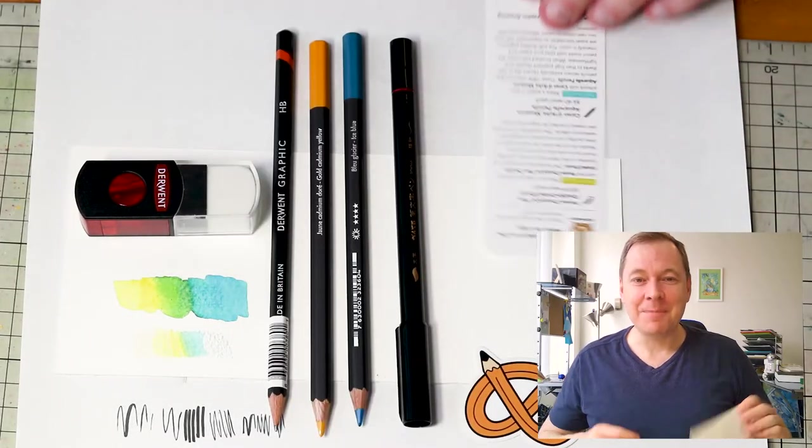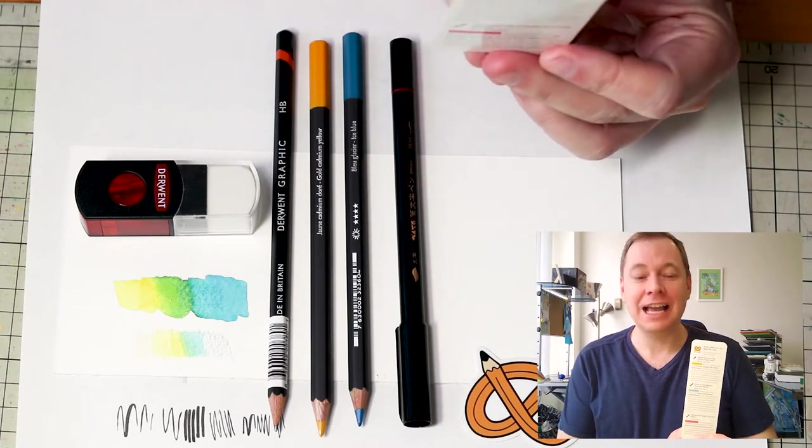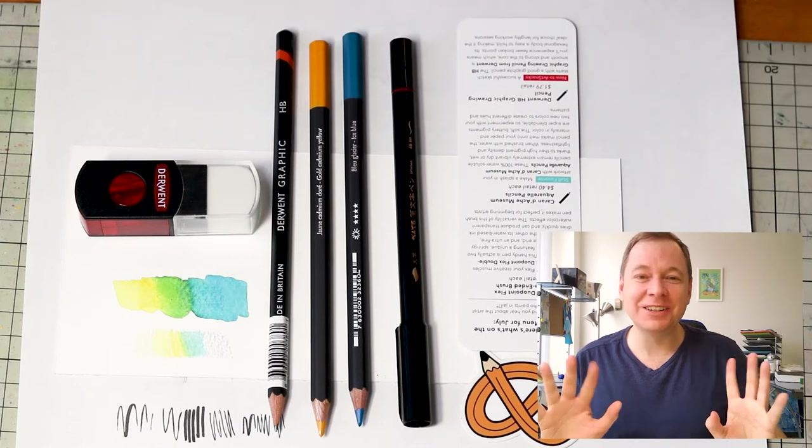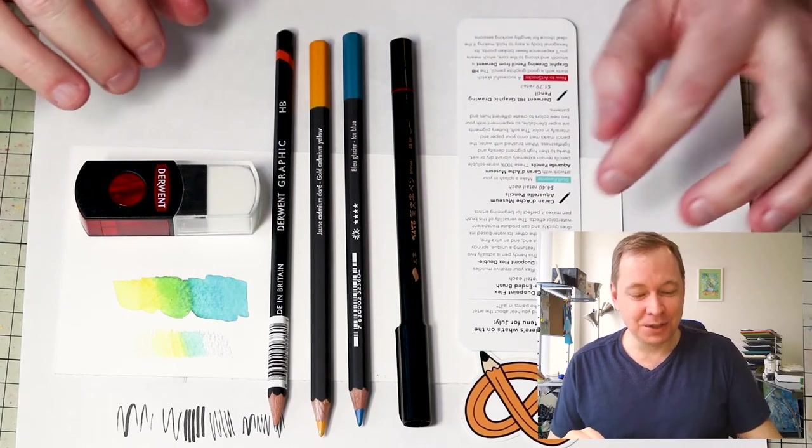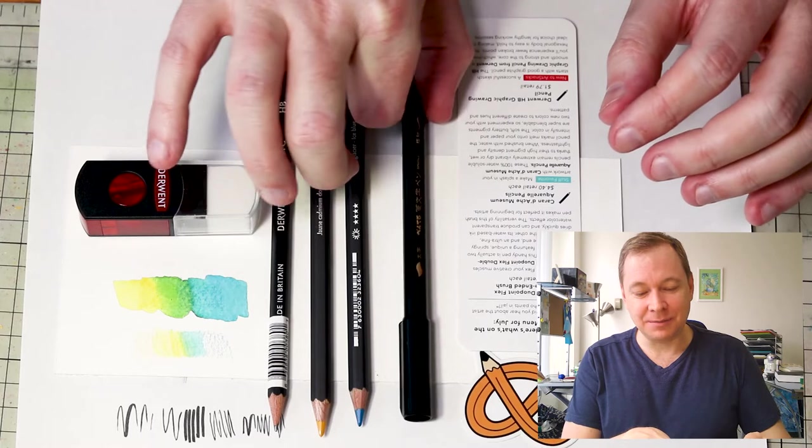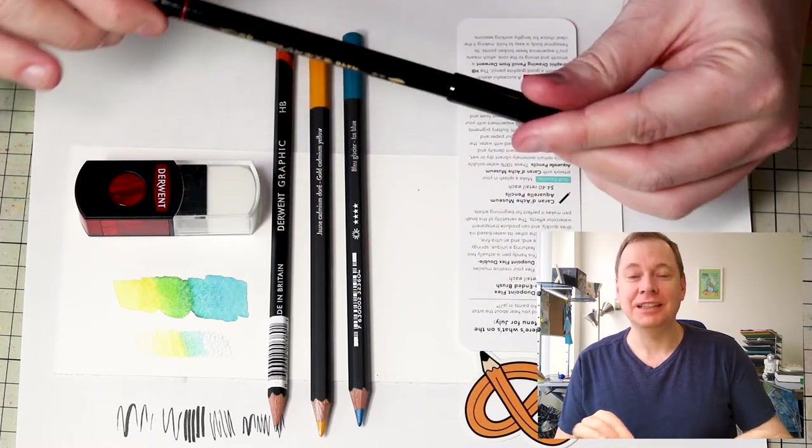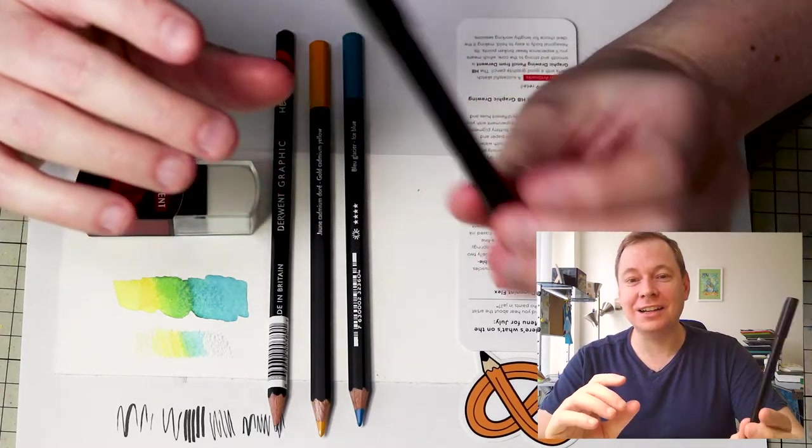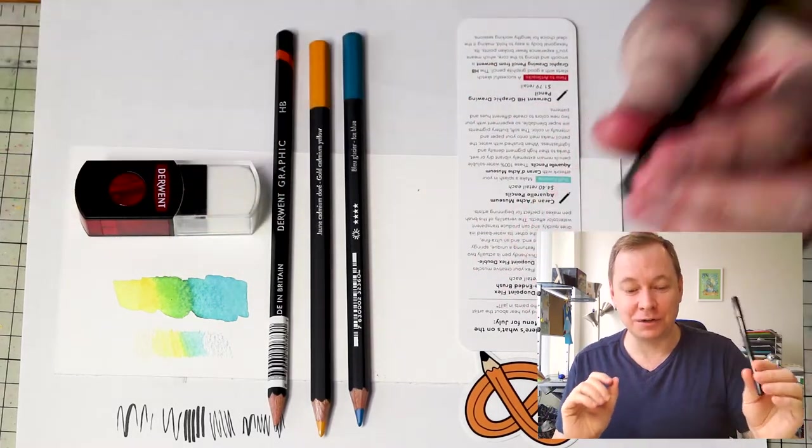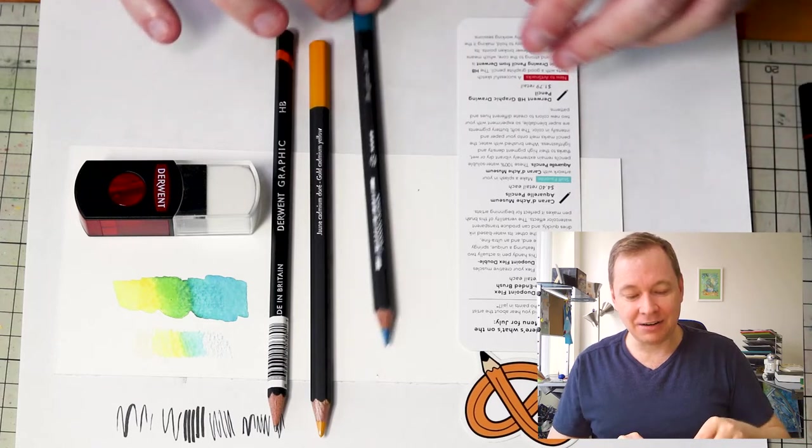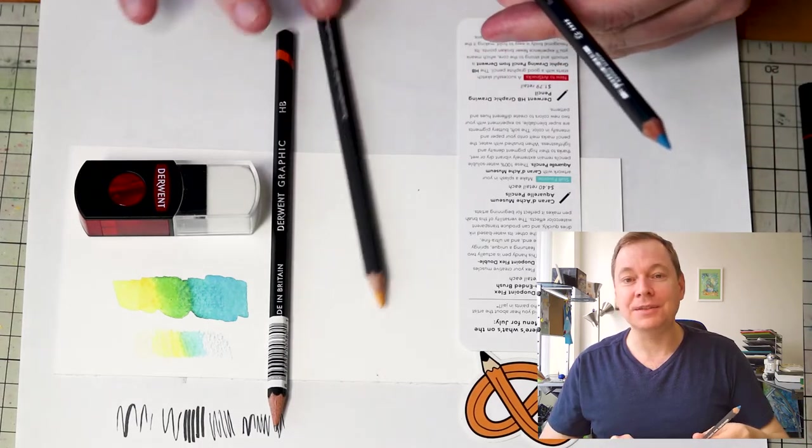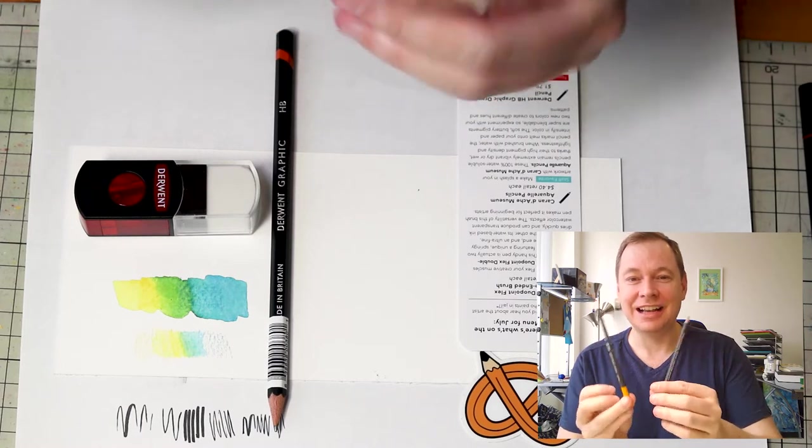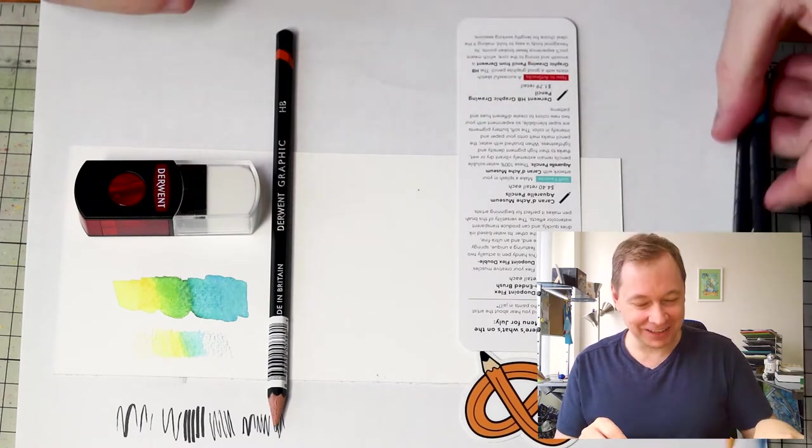So to recap, this is the box for July. We have the Pentel Duopoint Flex Double Ended Brush, $8.99 retail each. Apparently this pen alone is almost worth the entire cost of the box that I got for $10. Then we have the Caran d'Ache Museum Aquarelle pencils for $4.40 each.